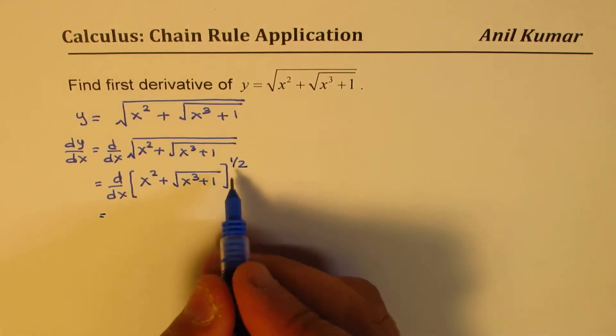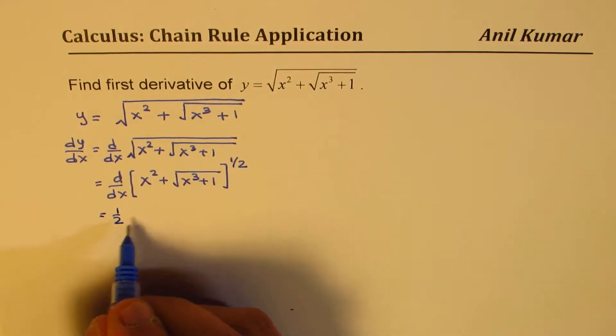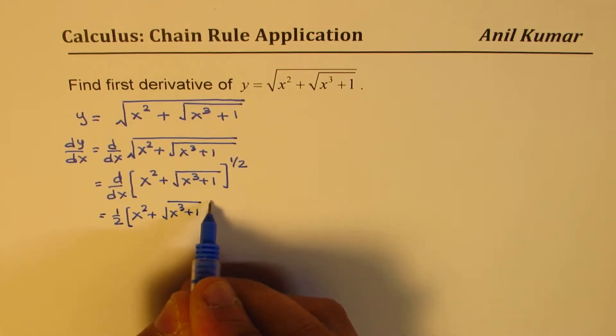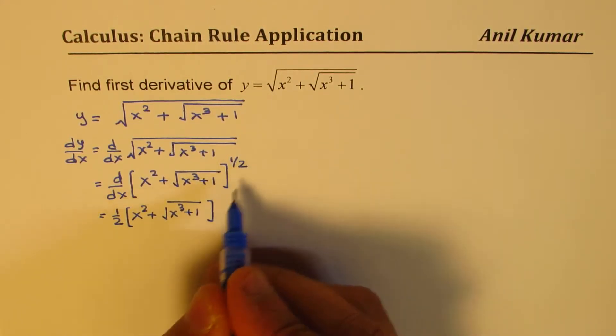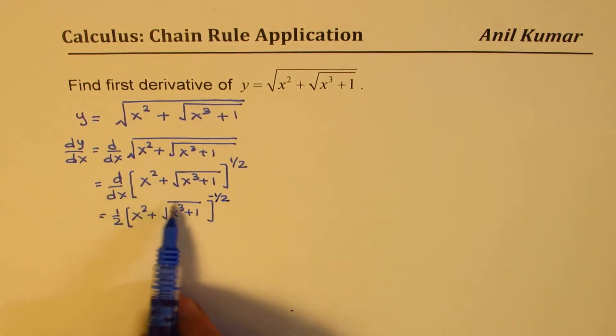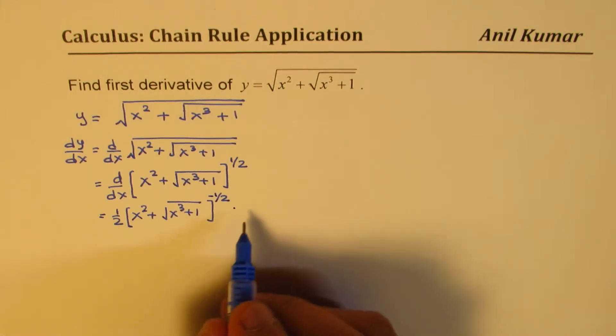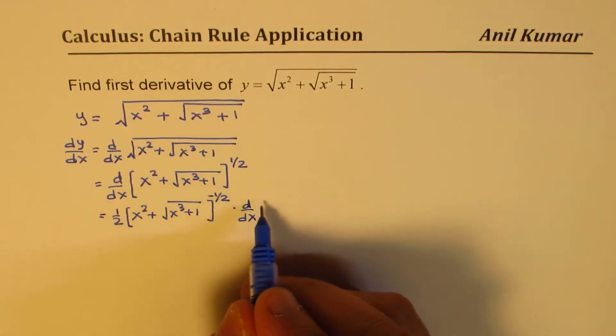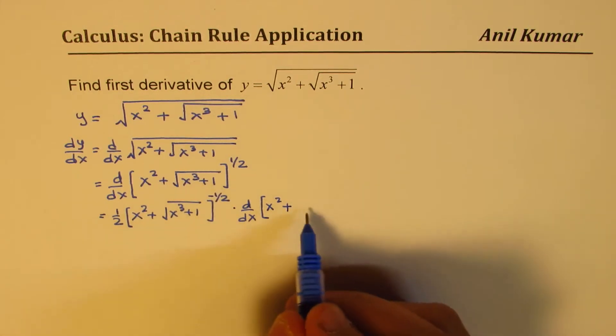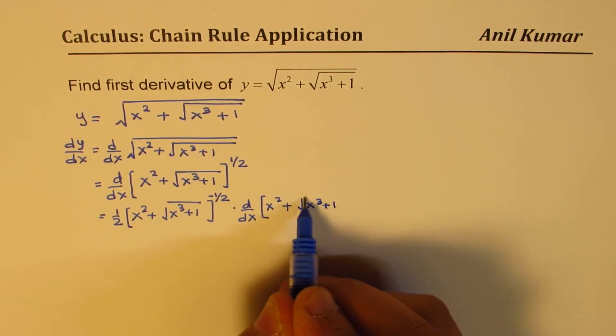If you find this derivative, you get half times all this, which is x square plus square root of x cube plus 1, to the power of half minus 1, which gives you minus half. Now the inside function derivative you have to multiply it by, so you get derivative of the inside function which is x square plus square root of x cube plus 1.